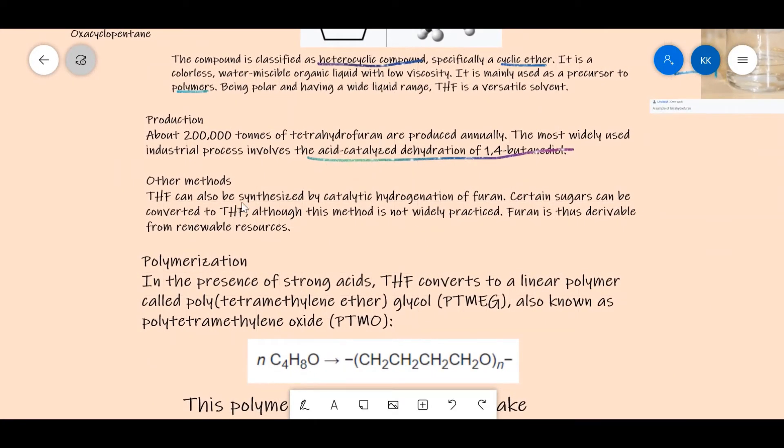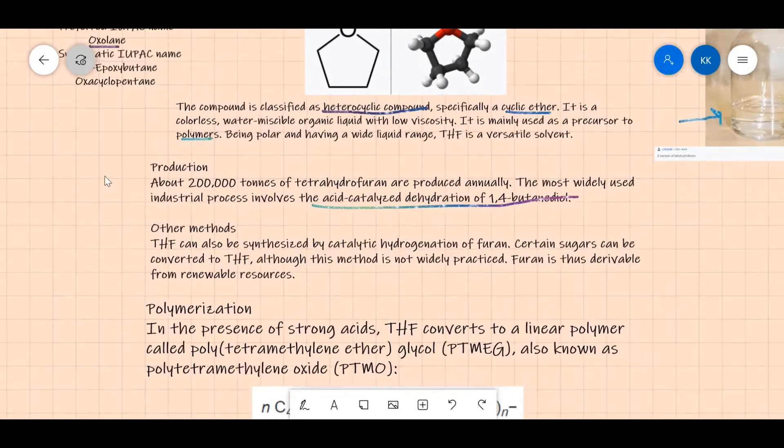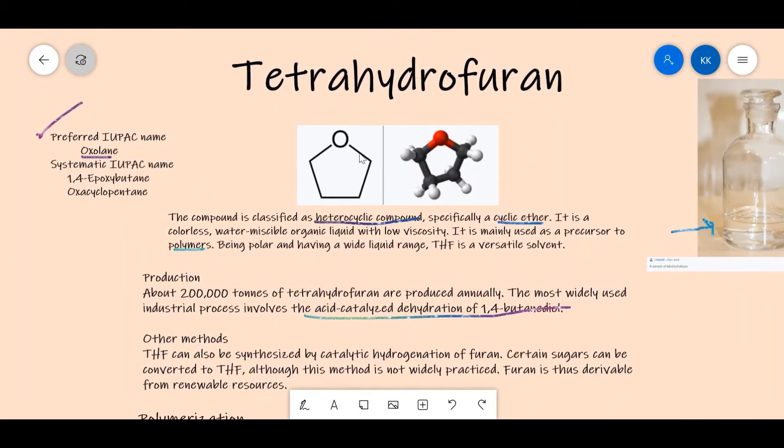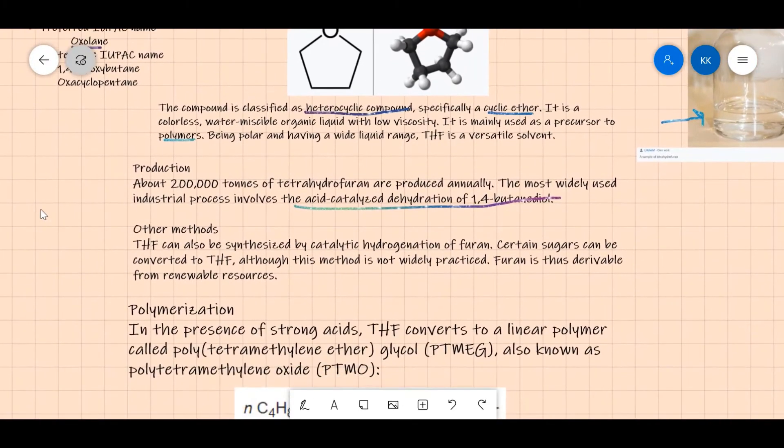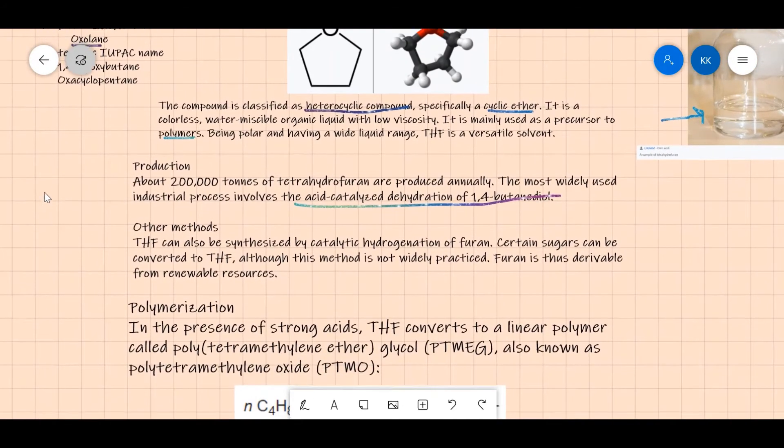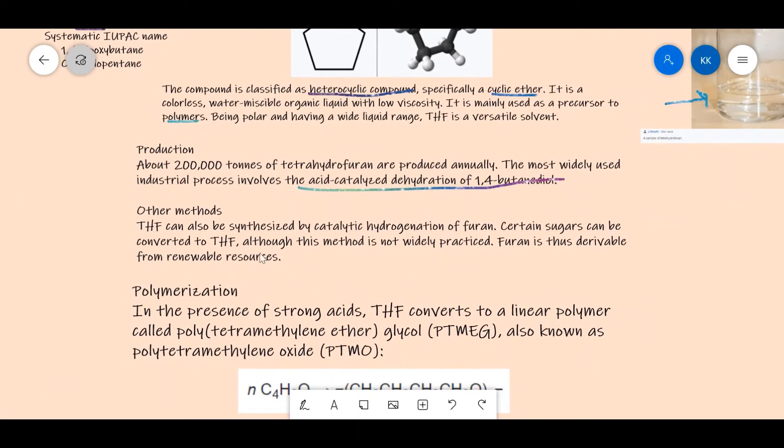THF can be synthesized by the catalytic hydrogenation of furan. As we saw, furan had two pi bonds, so catalytic hydrogenation would enable the removal of those pi bonds. Certain sugars can be converted to THF, although this method is not widely practiced. Furan is thus derivable from renewable resources.